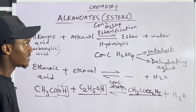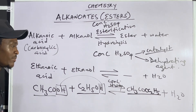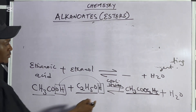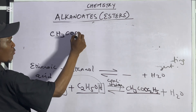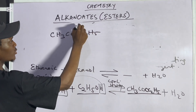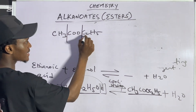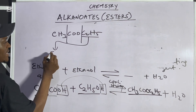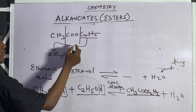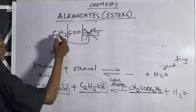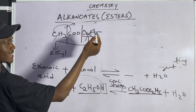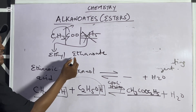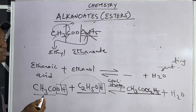Now for naming the ester CH₃COO-C₂H₅: split it into three parts. The last alkyl group, C₂H₅, has two carbons — so it is named 'ethyl' first. Then we are left with two carbons on the other side, making it 'ethanoate.' So the ester is called ethyl ethanoate.